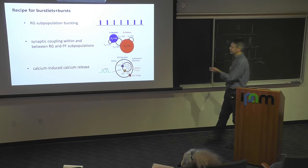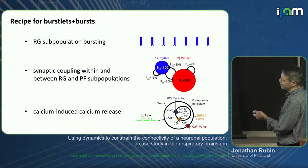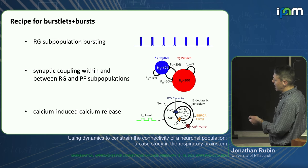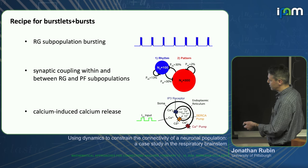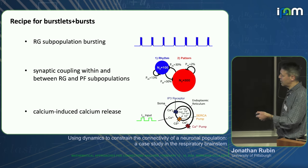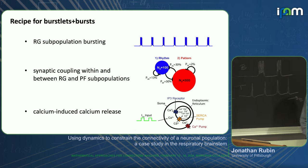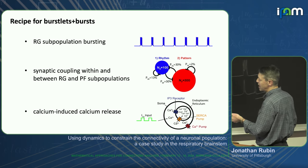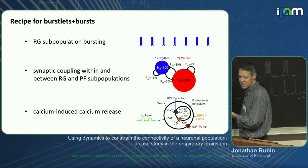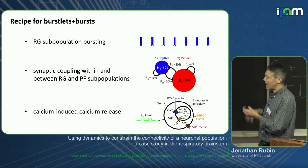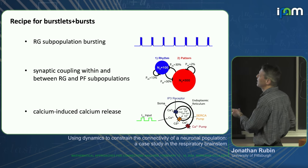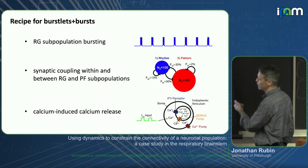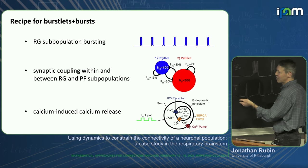To summarize: the recipe for burstlets and bursts is a subpopulation that generates bursts, which uses calcium-induced calcium release to recruit the rest of the neurons into a successful burst. What I haven't addressed — the original topic of the caveman study — is how the rhythm-generating population manages to synchronize and successfully generate bursts over and over, and how the ramping arises. So we have to go back to this.